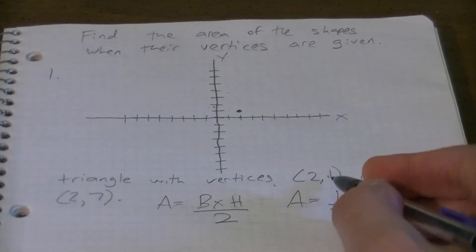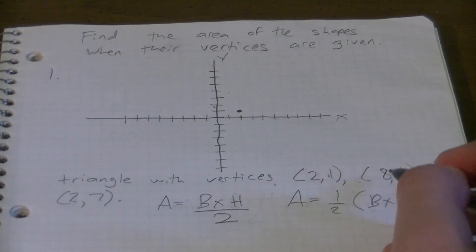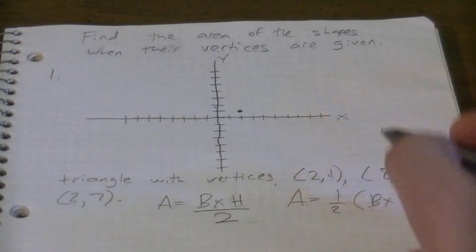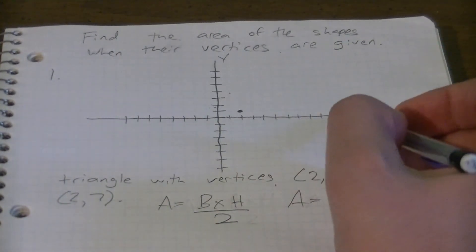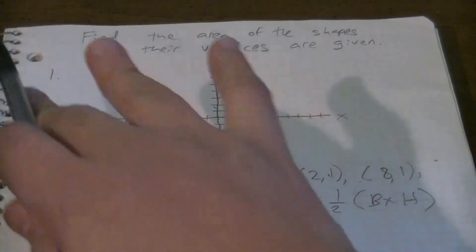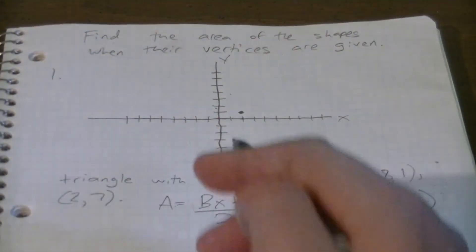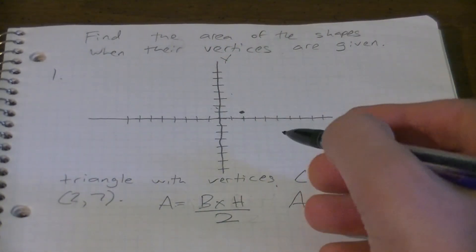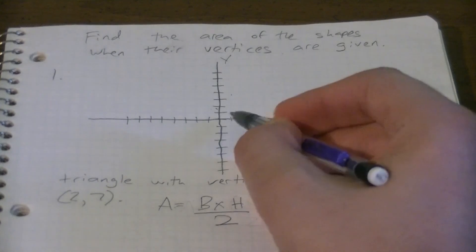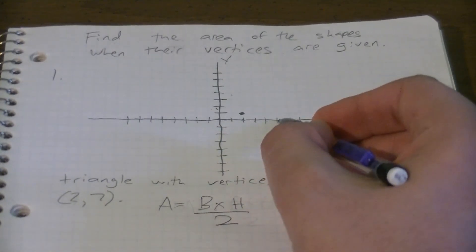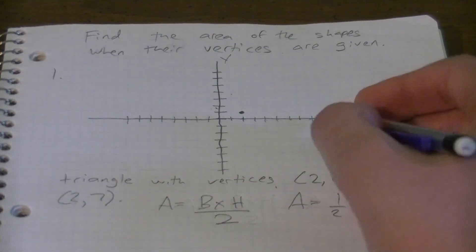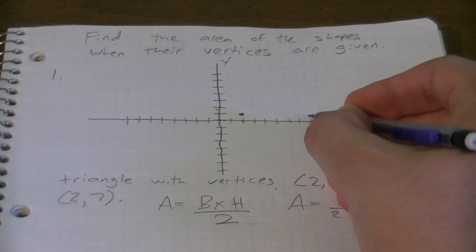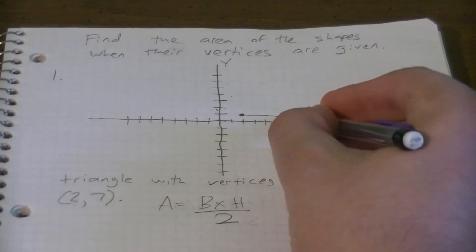(8,1) - how do we plot that? We move over to the x-axis. The x-axis is the horizontal line and the y-axis is the vertical line, and it makes a nice little cross on our coordinate plane. So here we go, (8,1): zero, one, two, three, four, five, six, seven, eight, and then up one right here. And we'll connect them.